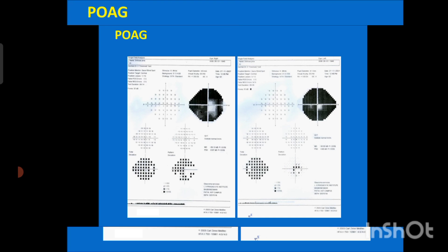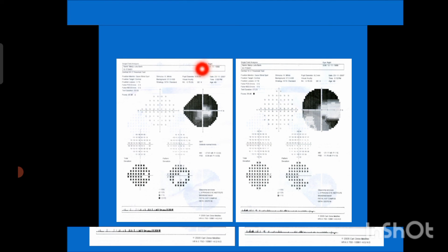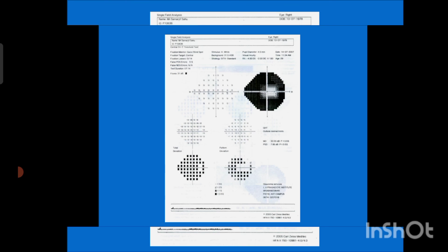Right here we can see an arc — a superior arcuate scotoma. With this we can classify which type of scotoma it is. The classification shows that the central vision would be preserved, while the peripheral visual field will be lost.